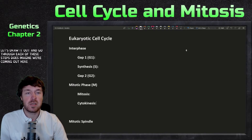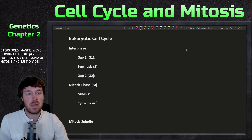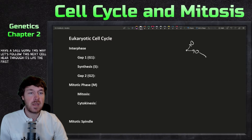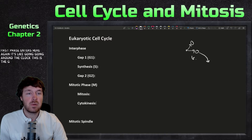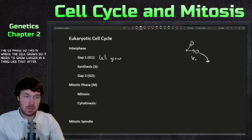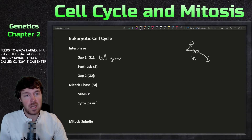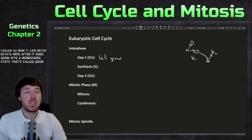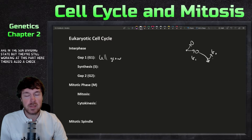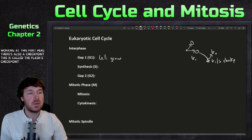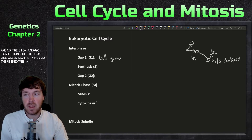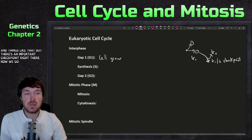Imagine a cell that's just finished its last round of mitosis and divided. We follow the new cell through its life. The first phase it enters is G1, where the cell grows and gets larger after freshly dividing. A cell can also enter an undividing state called G0 — neurons, for example, are in this state but are still functioning. There's also an important G1/S checkpoint here, acting like a green light with enzymes involved.